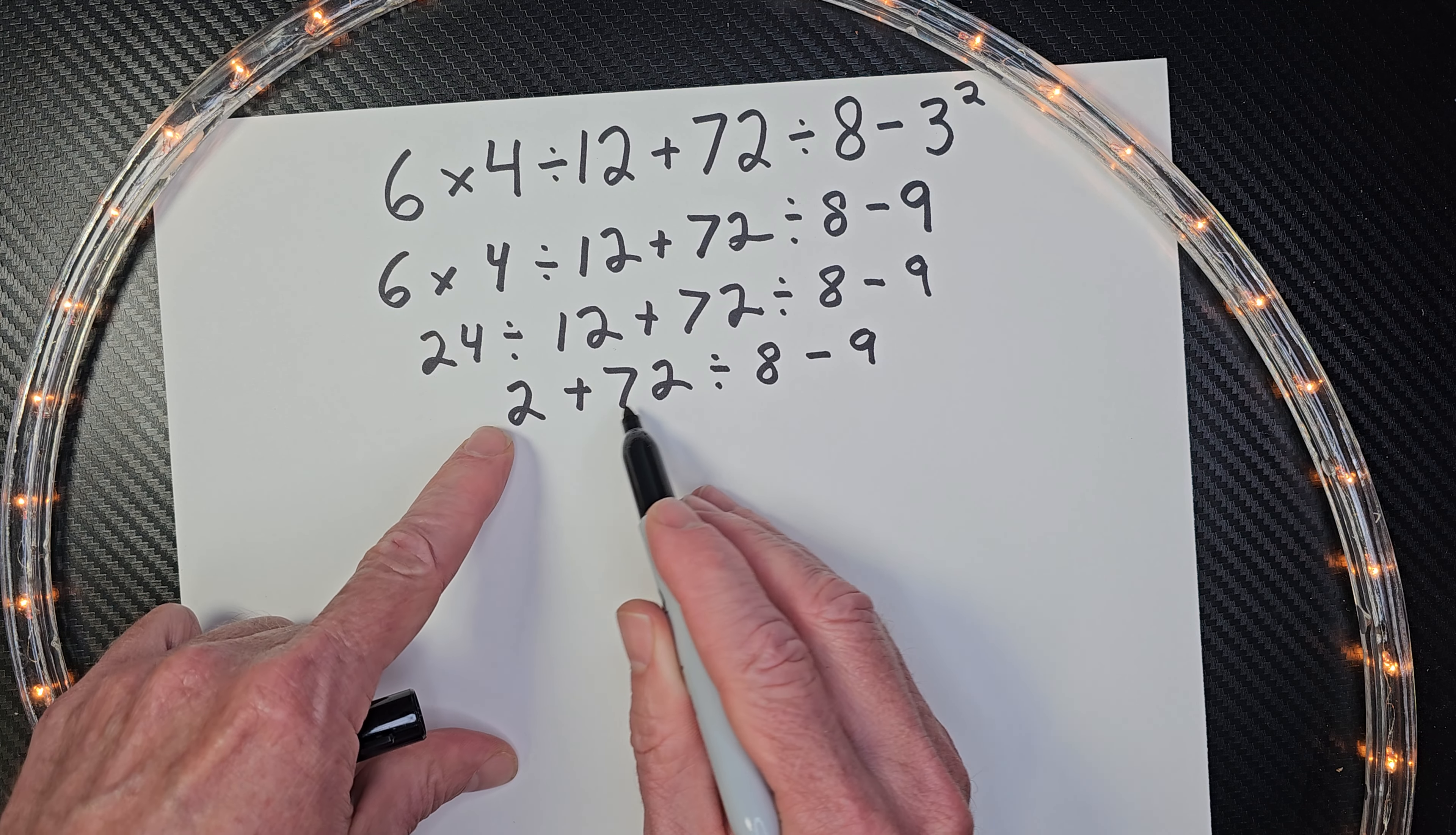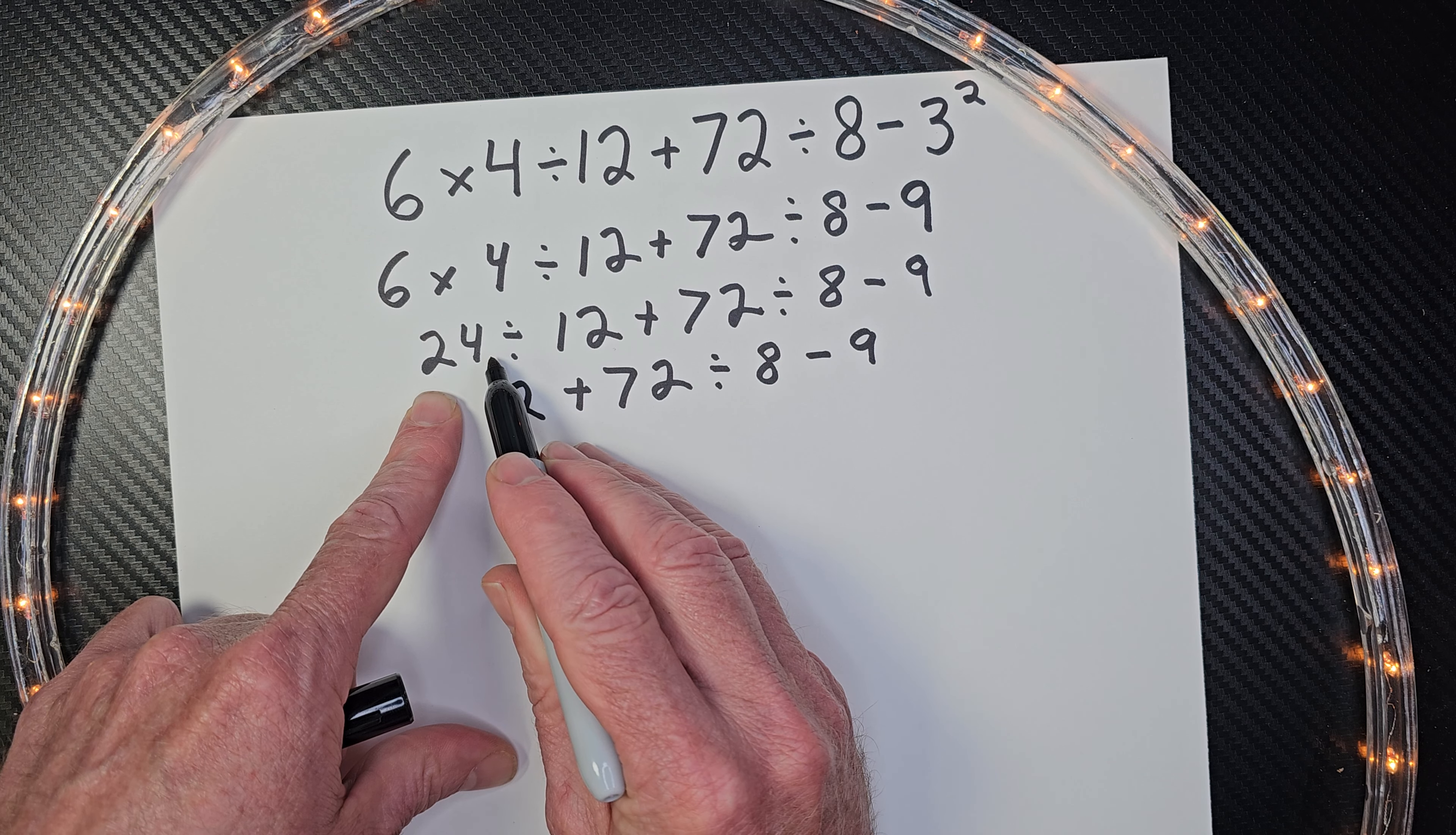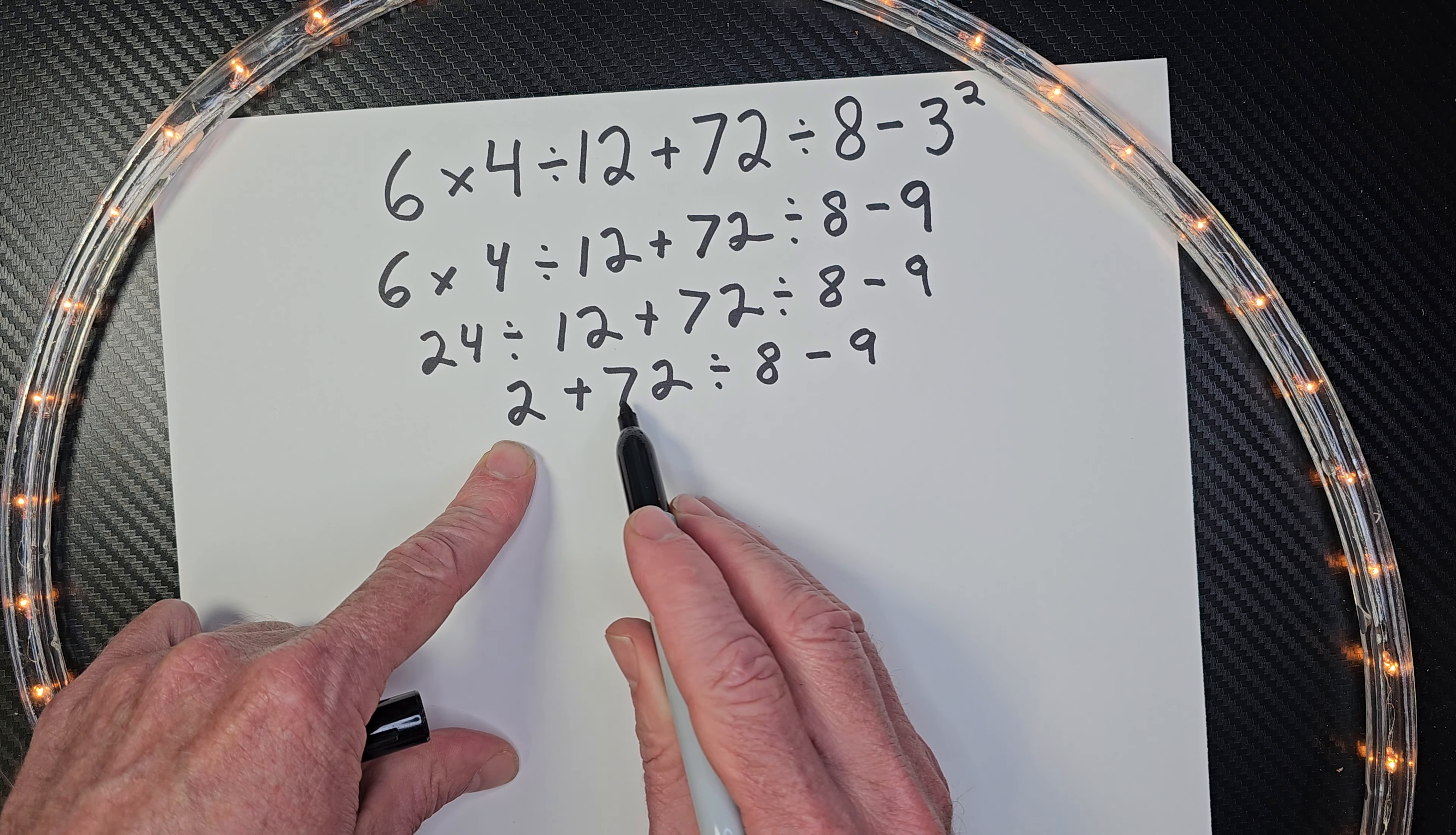So now I'm going to go ahead. I really want to do the addition, don't you? It's like, yeah, let's do this. But no, remember the rule. We need to do multiplication and division first from left to right, and then at the end we do the addition and subtraction.